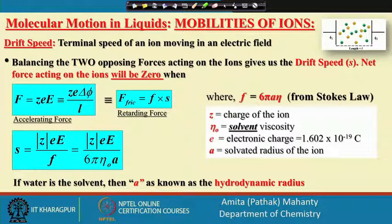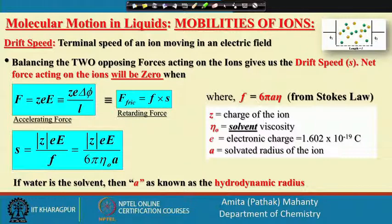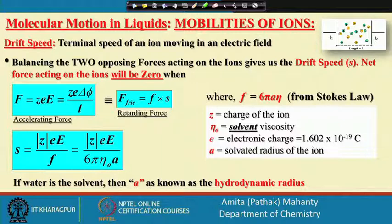The accelerating force is the force which is experienced by the charged particles on application of an electric field. This electric field is nothing but the potential gradient dφ/L. And if the total charge is ze, then ze times dφ/L is equal to the force which is acting on the particle, accelerating the particle to move from one electrode to another — positive charge moving to the negative electrode, negative charge moving to the positive electrode.